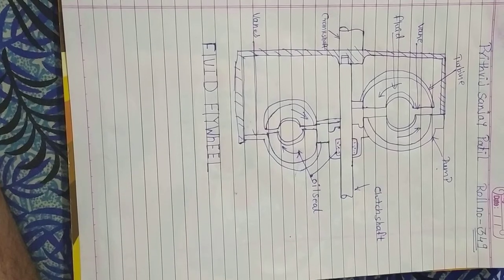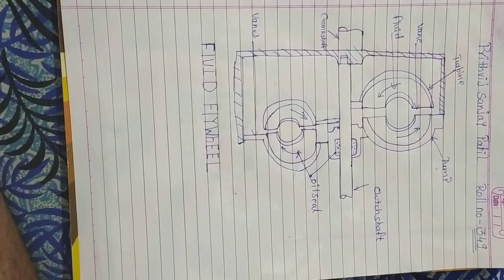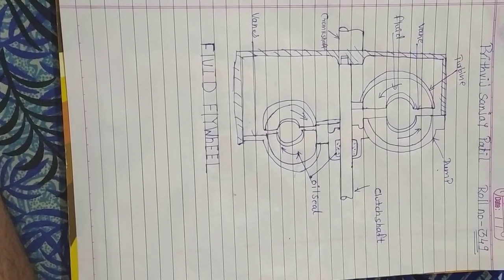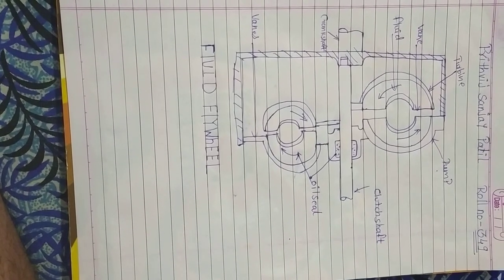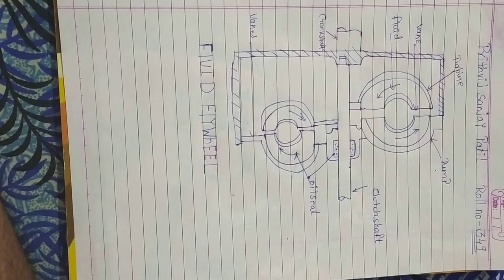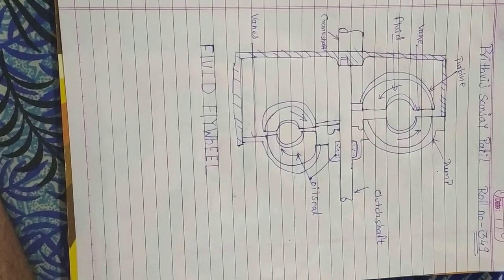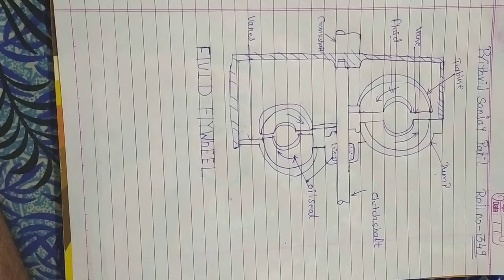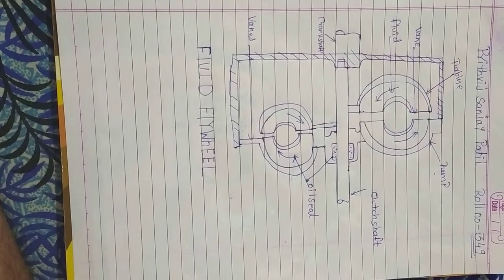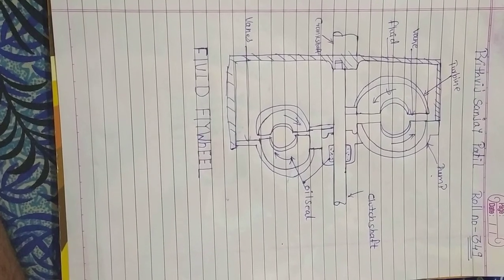There are two turbines: one is placed on the upper side of the clutch shaft and one is on the downside. Both constructions are the same. Before explaining the fluid flywheel, I will explain with one example.